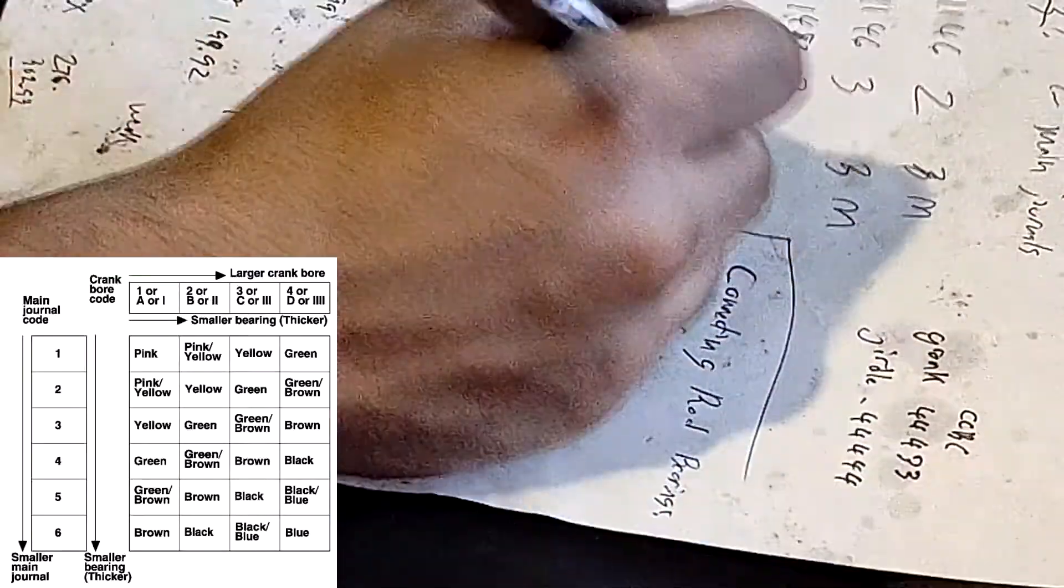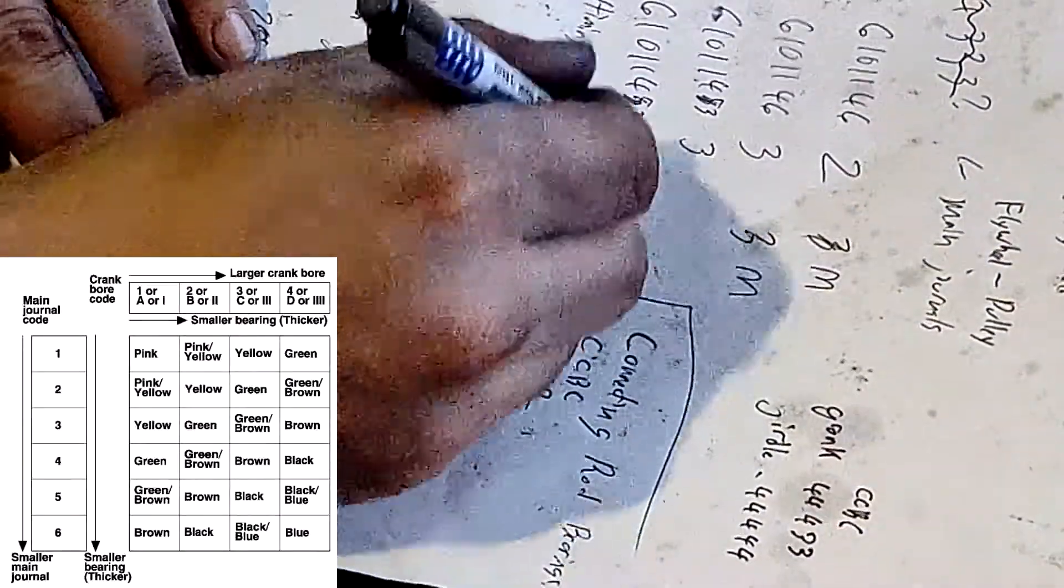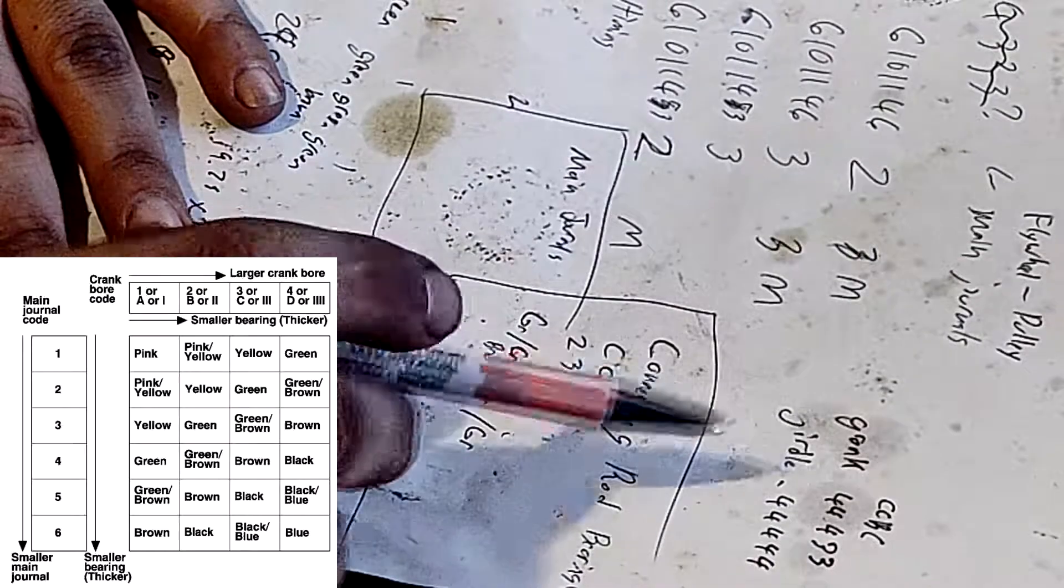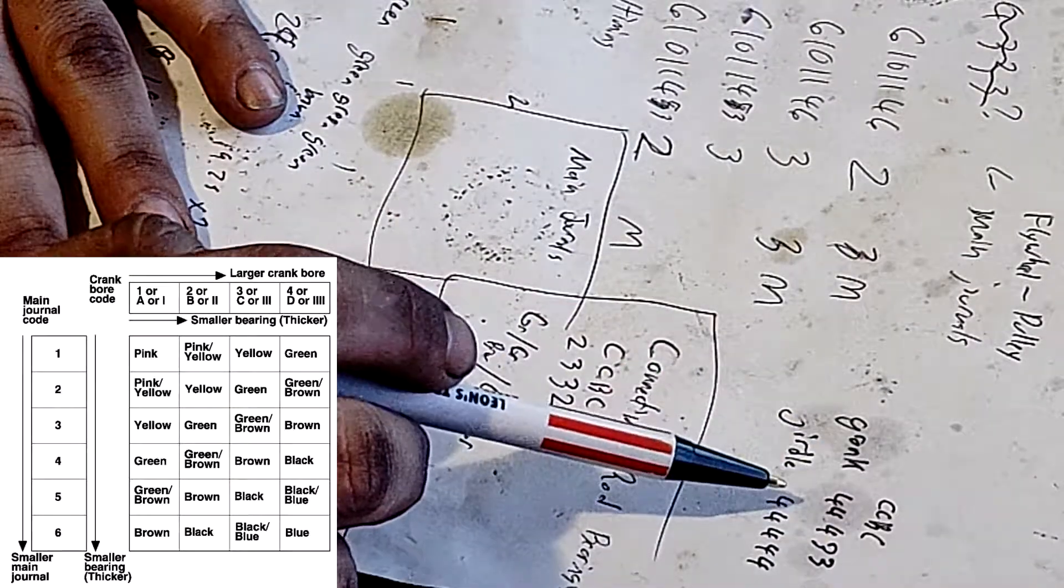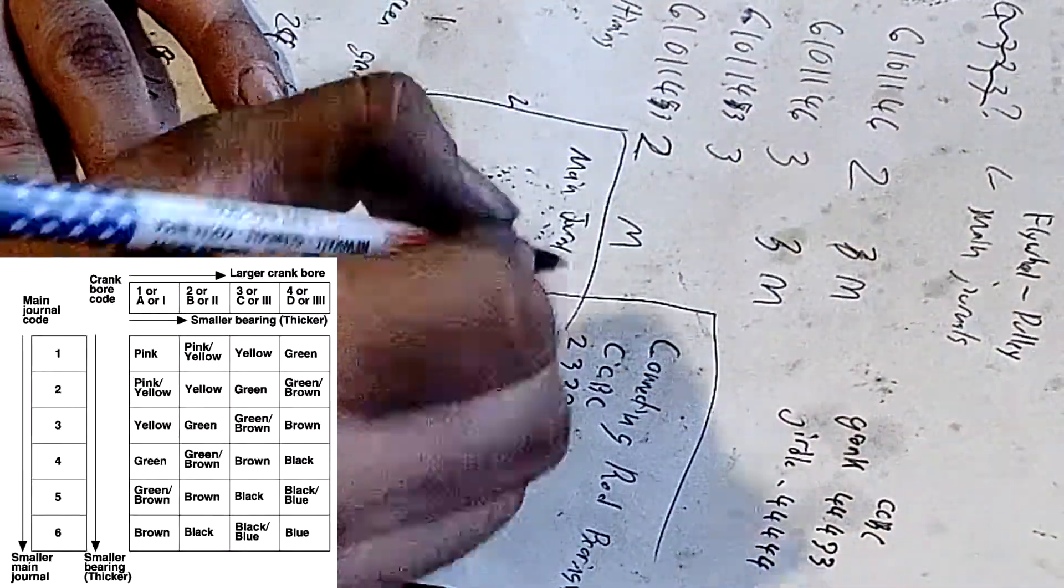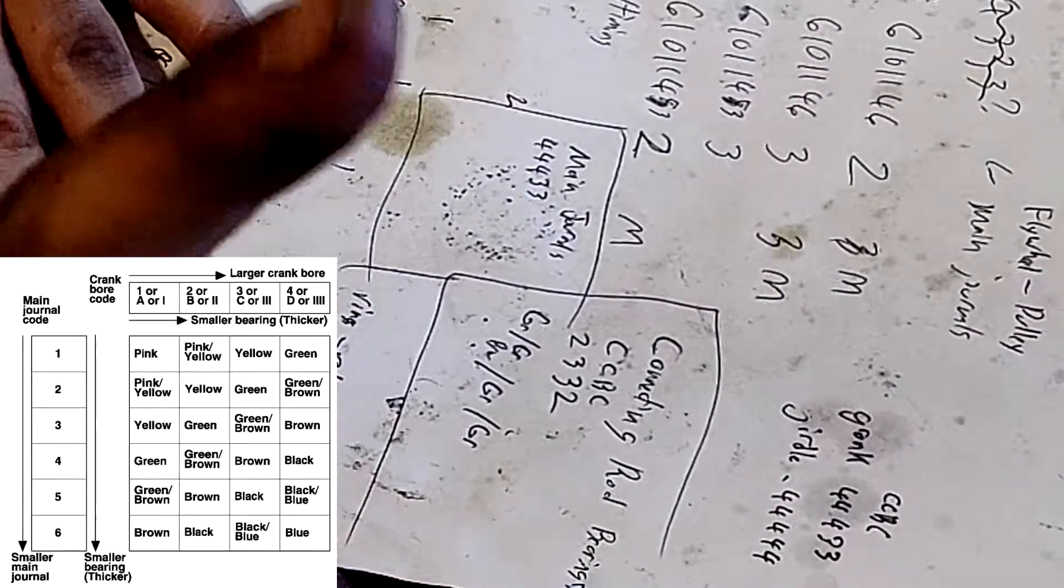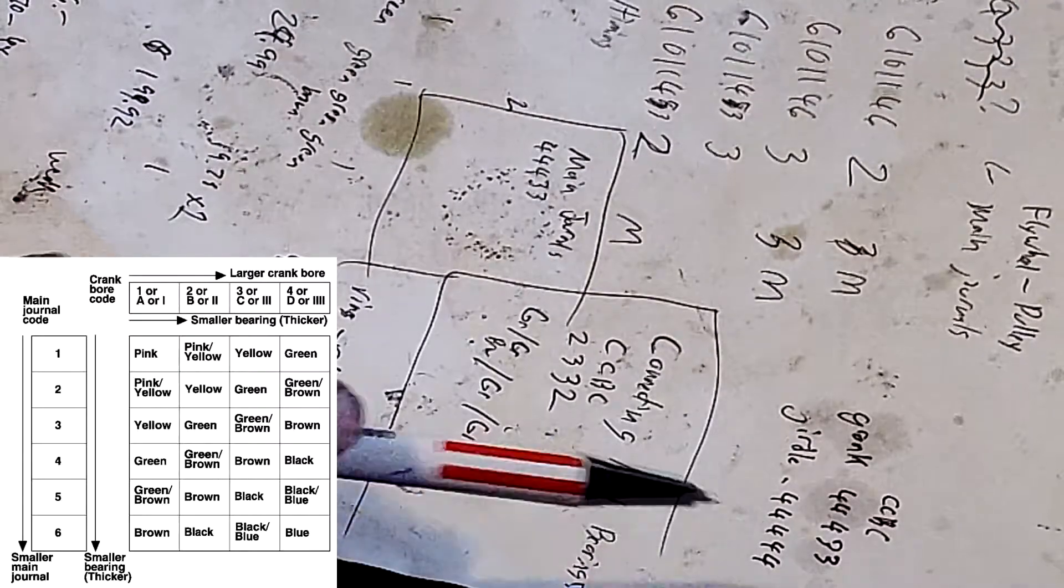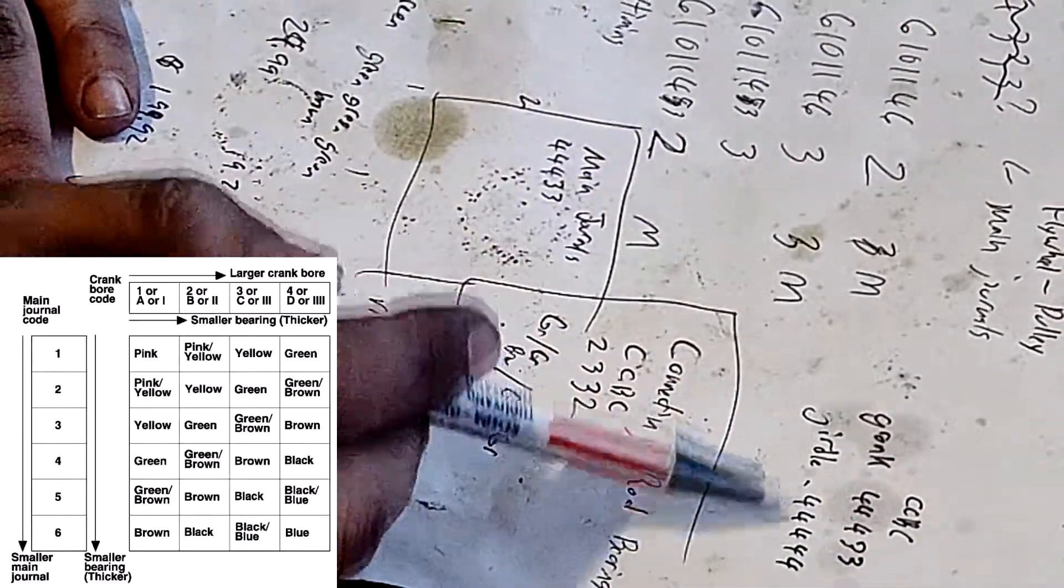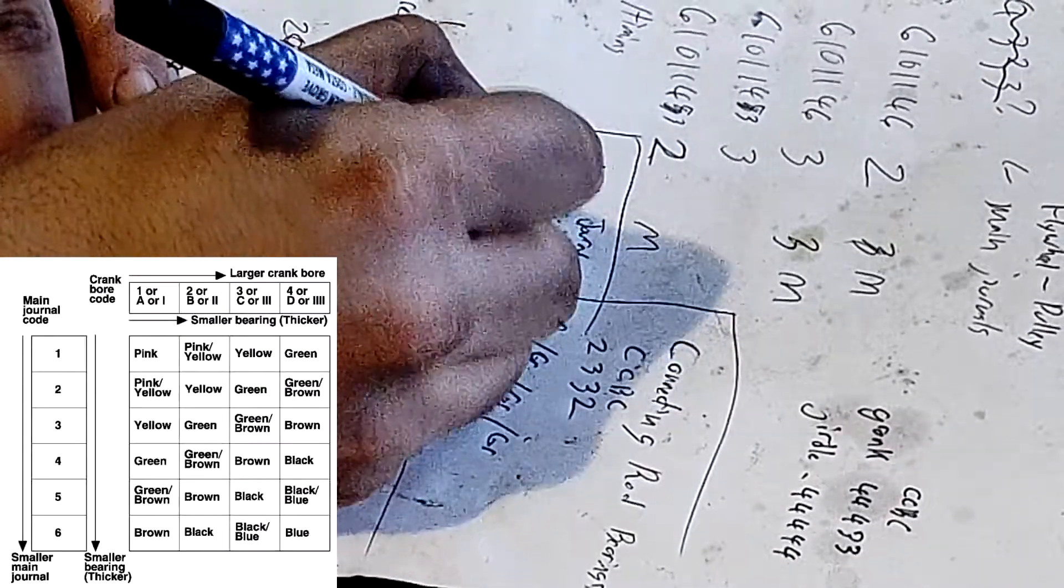Now for our main journals we're just gonna make a little box right there. Our crank bore code which is what's on the crank is 4 4 4 3 3. So our crank is 4 4 4 3 3. Now if we go to our girdle which would be our main journal code, we have 4 4 4 4 4.